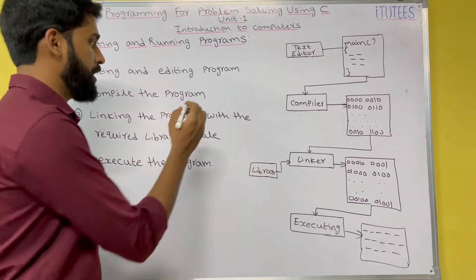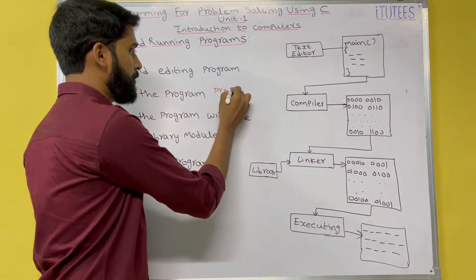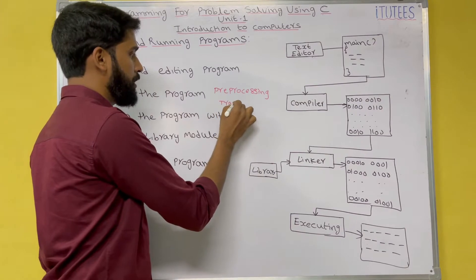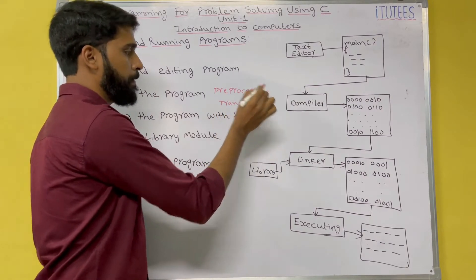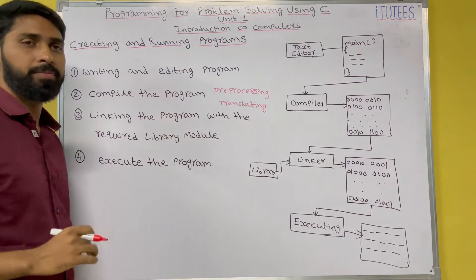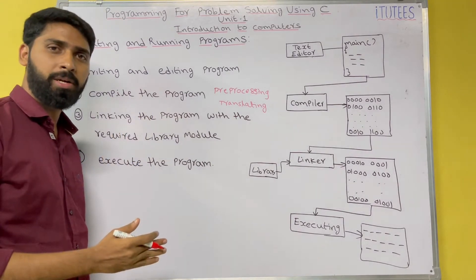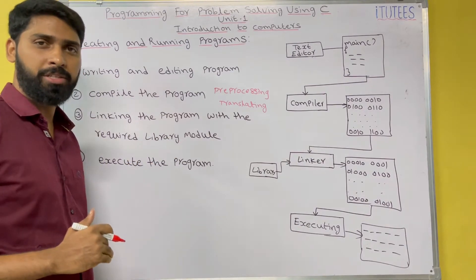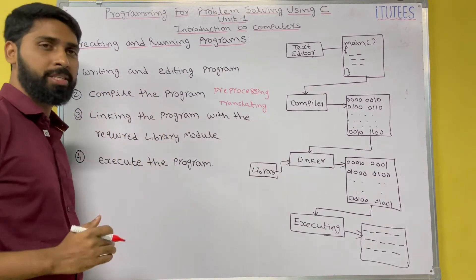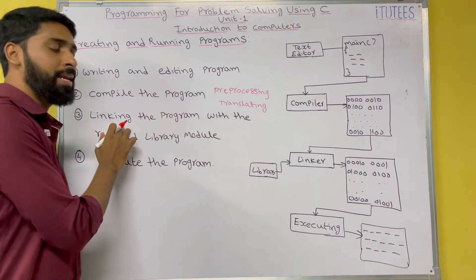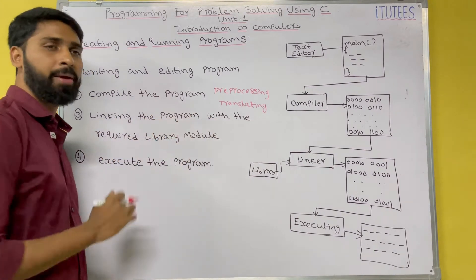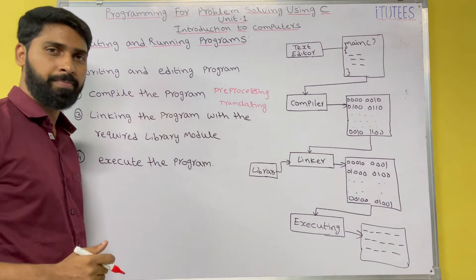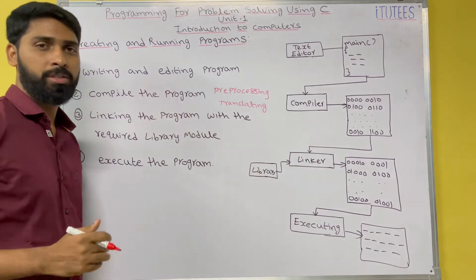We need a translator to convert the high-level language instructions into machine language instructions. The compiler does two things: one is pre-processing and the second one is translating. So the compiler converts high-level language instructions into machine language instructions. After the second step, the third step is linking the program with the required library modules, and finally we execute the program.